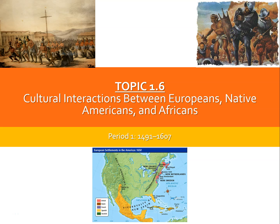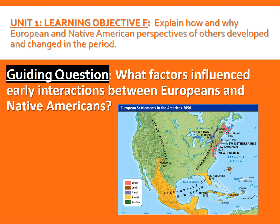Welcome back, guys. We are now finishing up period one of the APUSH curriculum by looking at topic 1.6, cultural interactions between Europeans, Native Americans, and Africans. This is a pretty brief section, as most of them are in period one, but there are some really important topics we need to cover. So let's begin with our first guiding question: what factors influenced early interactions between Europeans and Native Americans?